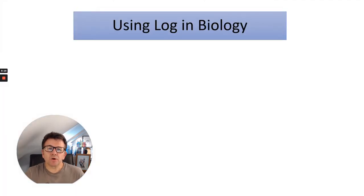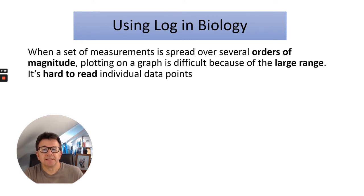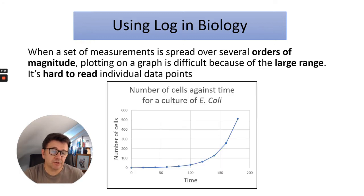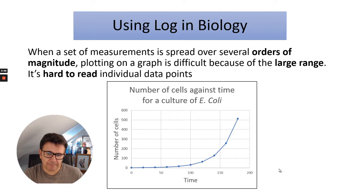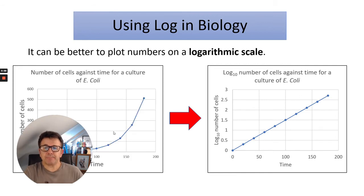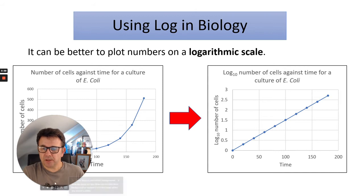When using log in biology, the first thing to say is that when a set of measurements is spread over several orders of magnitude, plotting a graph is difficult because of the large range — it's hard to read individual data points. Looking at this example of number of cells against time for a culture of E. coli, up to about 100 minutes it's very difficult to work out the actual number of cells, and we really don't know what's happening before 100 minutes. So it can be better to plot the numbers on a logarithmic scale.